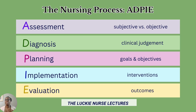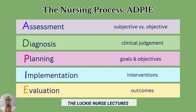A great way to remember the different steps of the nursing process and their order is through the acronym ADPIE. Assessment is where you collect data — both subjective and objective. Diagnosis is where you use clinical judgment to create a nursing diagnosis. Planning is where goals and objectives are established. Implementation is actually implementing those healthcare interventions identified during planning. And lastly, evaluation involves reflecting on different patient outcomes.